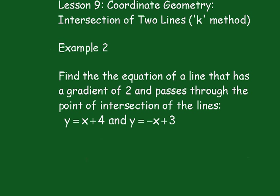In Example 2, we have to find the equation of the line that has a gradient of 2 and passes through the point of intersection of the lines y = x + 4 and y = -x + 3.